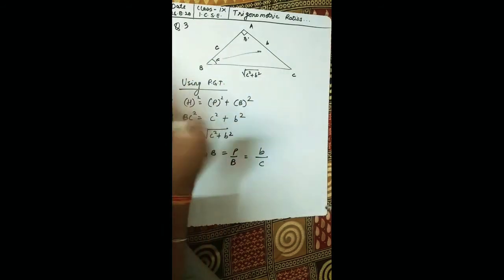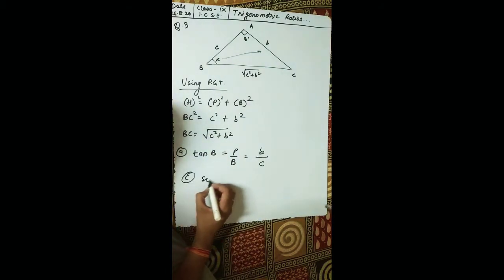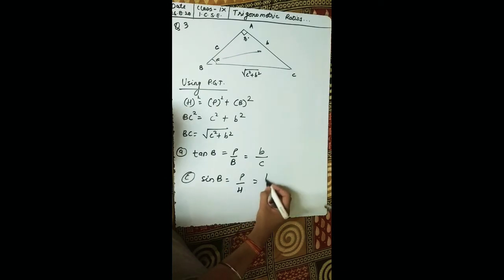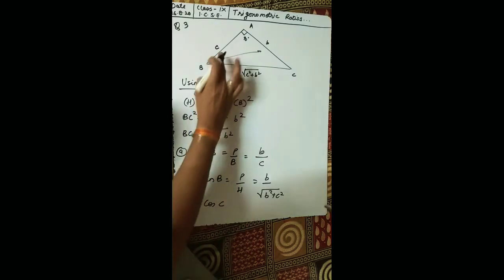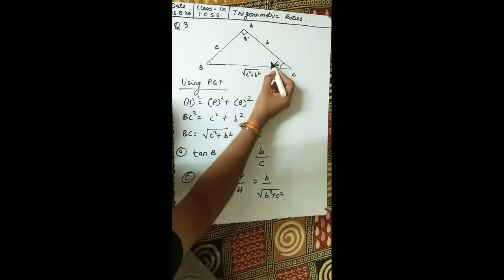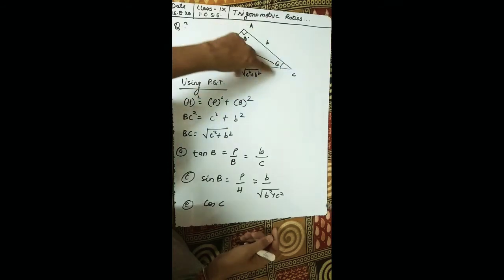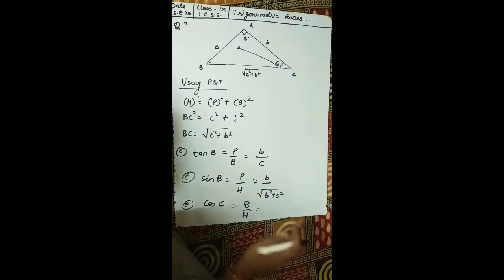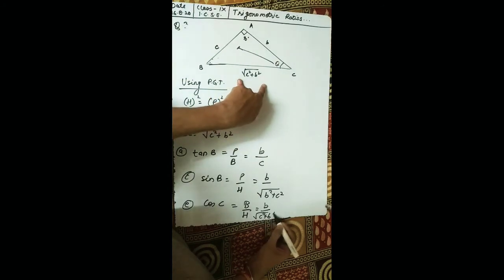For sin B, the theta is on B, so perpendicular upon hypotenuse gives b over the square root of b squared plus c squared. For cos C, the theta is now on C, so the opposite side becomes the perpendicular and the other side becomes the base. Cos equals base upon hypotenuse, giving b over the square root of c squared plus b squared.